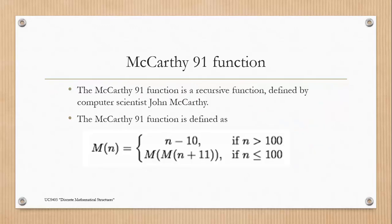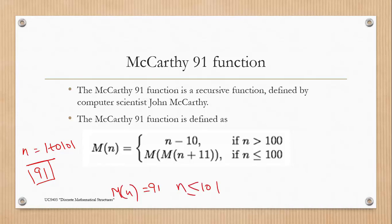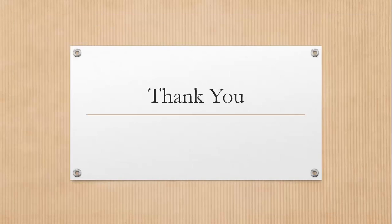You can solve this McCarthy function for any value of n ranging from 1 to 101 and you will get the value 91 — that is why it is known as the McCarthy 91 function. The McCarthy 91 function equals 91 if n ≤ 101, and equals n - 10 if n > 101. Hope the concepts of recursive functions are clear to you. In the next video we will discuss hashing functions. Thank you.